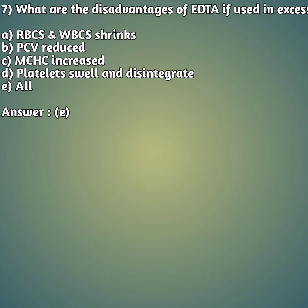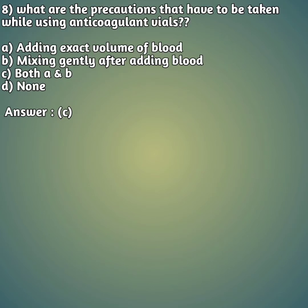Seventh question: what are the disadvantages of EDTA if used in excess? Option A: RBCs and WBCs shrink. Option B: PCV reduced. Option C: MCHC increased. Option D: platelets swell and disintegrate. Option E: all. The answer is option E — all of these are disadvantages when EDTA is used in excess.